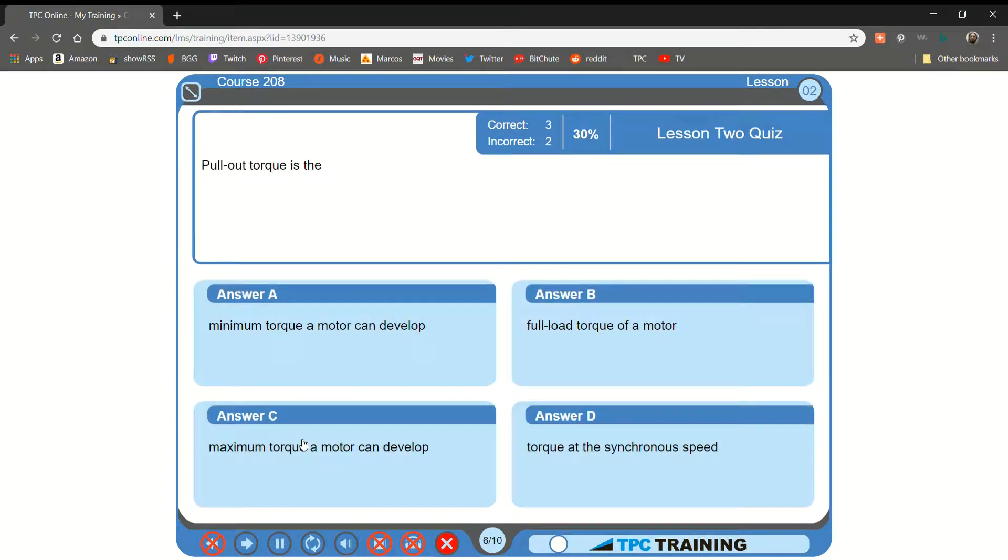Pull-out torque is the A. Minimum torque a motor can develop. B. Full load torque of a motor. C. Maximum torque a motor can develop. D. Torque at the synchronous speed. That is correct.